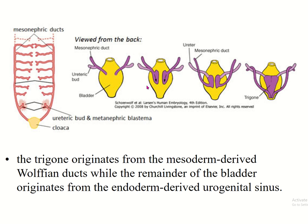The urinary bladder is developed from the endoderm of the urogenital sinus. The cloaca divides into two structures: the rectum and the urinary bladder. Most of the urinary bladder is derived from the cloaca and is endodermal in origin, but the trigone is developed from the absorbed mesoderm-derived Wolffian duct.